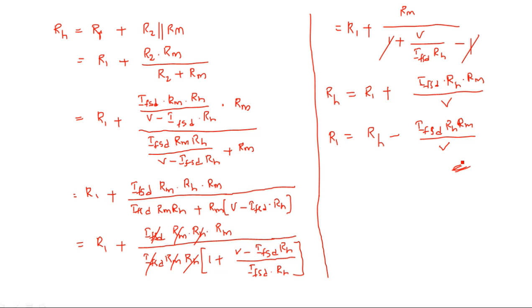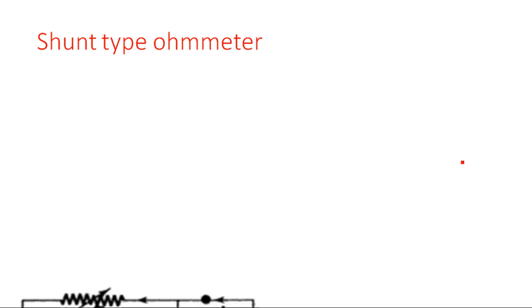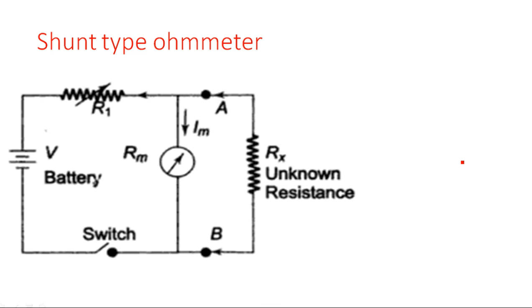We started with the half of the full scale deflection resistance value RH, which is R1 plus R2 parallel RM, and from there we derived the calculation. Now let us see the shunt type ohmmeter.